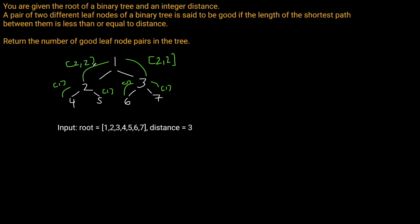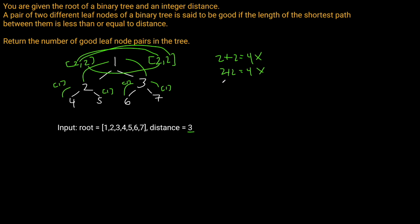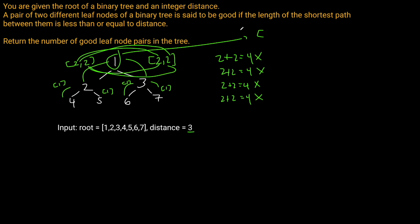Now the root node 1 receives [2, 2] from its left and [2, 2] from its right. We try every combination: 2 plus 2 equals 4, which exceeds our distance of 3, so none of these combinations are valid. No additional good leaf pairs are found at the root. If there were a next level, we would add 1 to every element and return [3, 3, 3, 3]. This process continues up the tree.